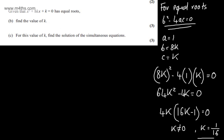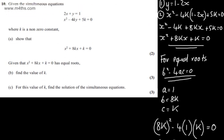In part c it says for this value of k find the solutions of the simultaneous equations. So in total now we're offered three marks to do this. At this stage I'm simply going to substitute in k equals 1 over 16 into this quadratic equation.